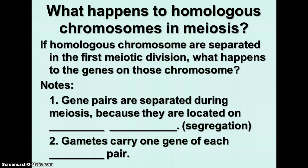What happens to the homologous chromosomes? Remember, we talked about meiosis, and you know that the homologous chromosomes get separated. The gene pairs are separated during meiosis because they're located on homologous chromosomes. This is called segregation — segregation just means separation. So, what we've done is separated those two alleles because they're on homologous chromosomes; they get separated in meiosis. Remember also that each gamete carries only one gene of each homologous pair — it's only going to have one copy of each gene on that chromosome.